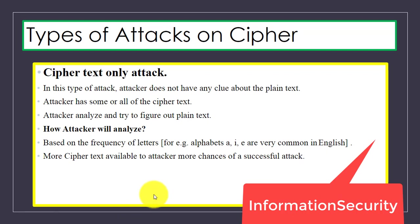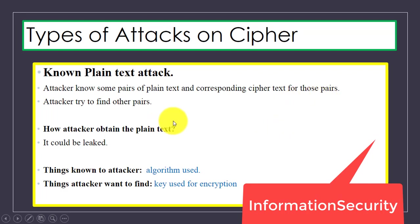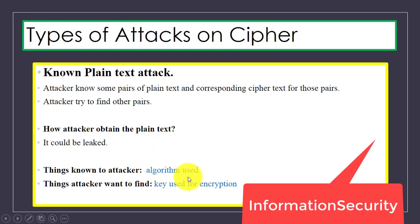In a known plaintext attack, the attacker knows some pairs of plain text and the corresponding cipher text for those pairs, and tries to find other pairs. The attacker may obtain the plain text if it is leaked. In this case, the attacker knows the type of algorithm used and wants to find the key used for encryption.